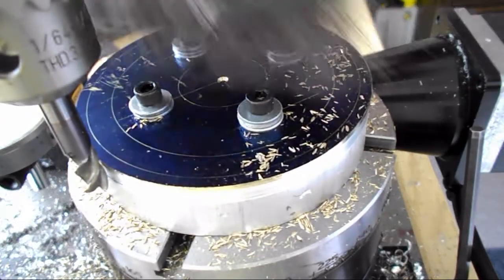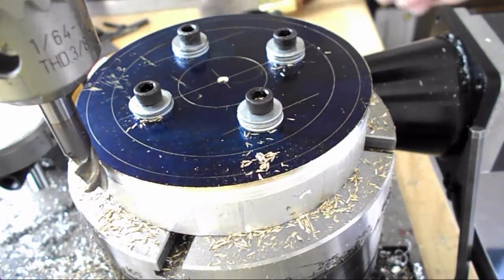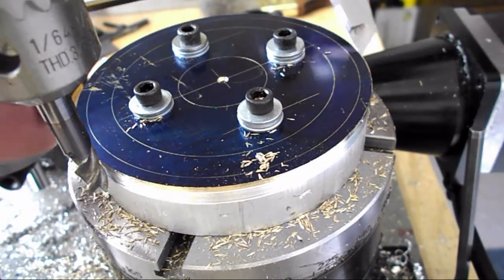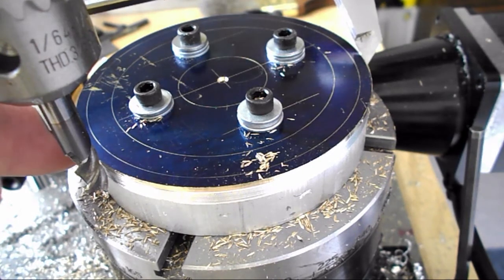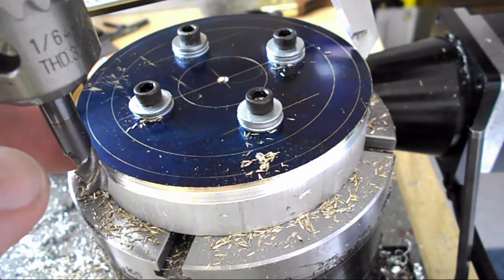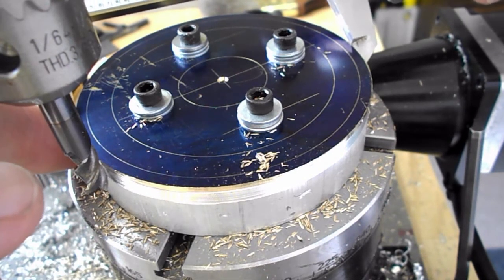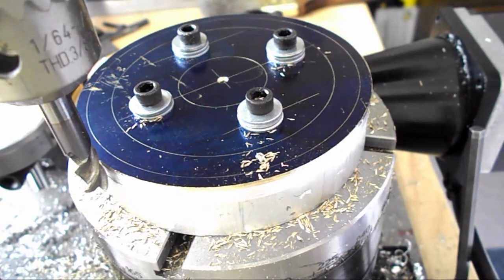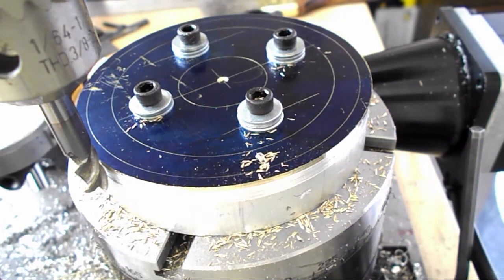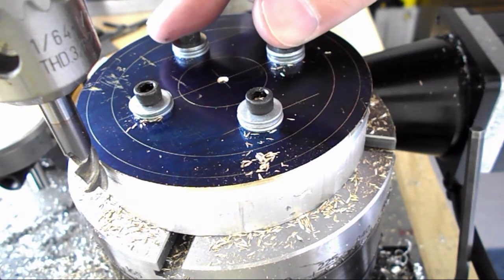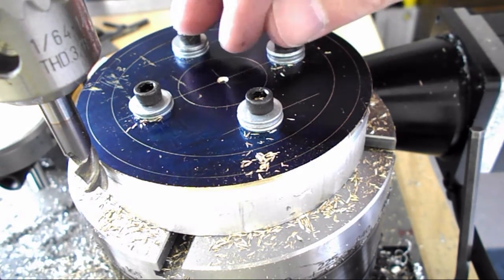I'm basically right on size where I need to be now with the diameter. It measures about 3.260 or so. So I'm gonna go around—I need it to be 3.258—so I'm gonna go around one more time, just do a little light finish pass. It should be ready to set up and actually cut the teeth.